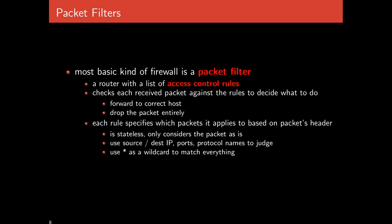The most basic kind of firewall is a packet filter — essentially a router with a list of access control rules. It sits in the network, receives all incoming and outgoing traffic right before it would go to or come from the internet at large, and examines all traffic, comparing packet information to its access control rules. It either forwards the packet to the correct host or to the internet if traffic is allowed, or it simply drops the packet entirely — pretending like it never received it.